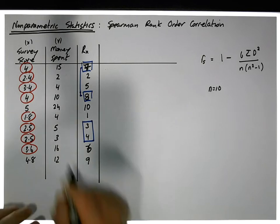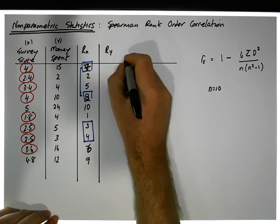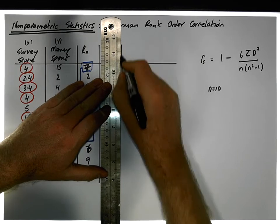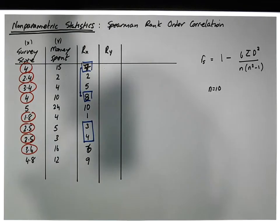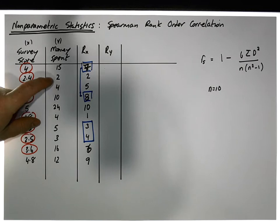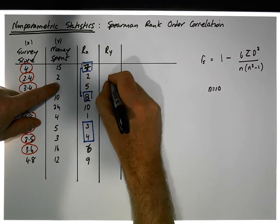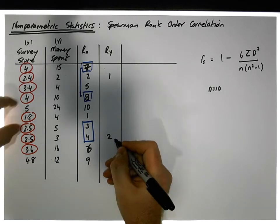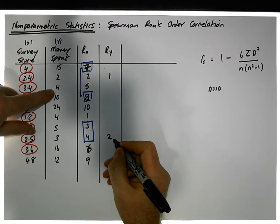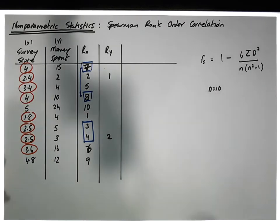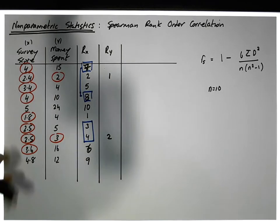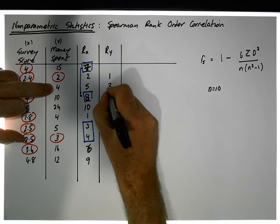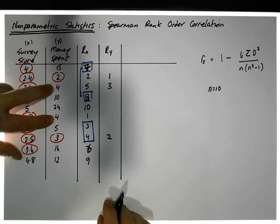Now let's rank the next variable — the ranks of Y. Let me get a ruler here. The smallest value of Y is two, so that gets ranked one. The next smallest value is three, that gets ranked two. The next smallest value is four, so let's label that — we did the two, we did the three, and this four gets rank three.